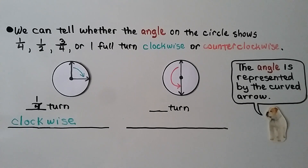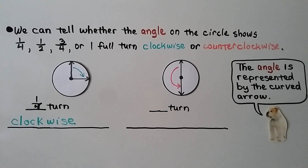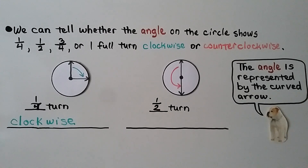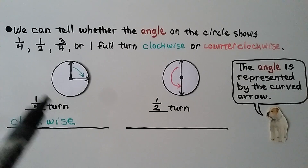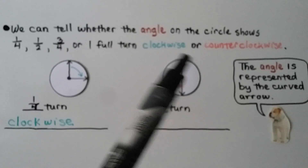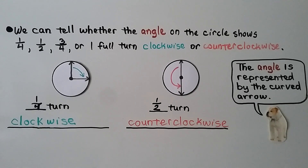Do you think this angle shows one-fourth, one-half, three-fourths, or one full turn? If you said one-half, you're correct. And did it turn clockwise or counterclockwise? Well, clockwise goes this way, but this arrow is going the opposite direction — the opposite direction of clock hands — so it's going counterclockwise. It made a half turn counterclockwise.